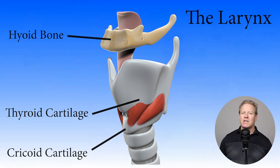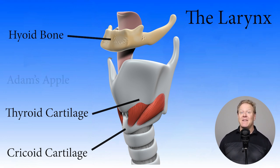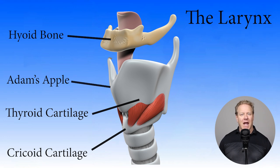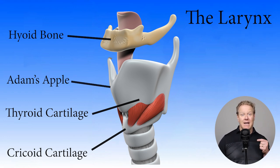The notch on the thyroid cartilage is commonly referred to as the Adam's apple, and the vocal cords are situated directly behind the Adam's apple.